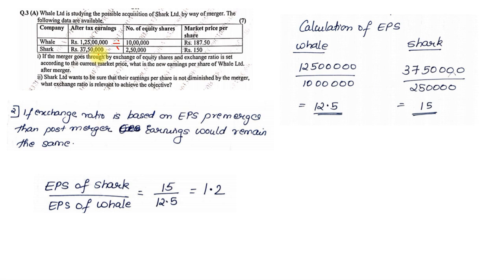The exchange ratio based on EPS = EPS of target company (Shark) divided by EPS of acquiring company (Whale) = 15 divided by 12.5 = 1.2. So if Shark doesn't want their earnings to be diminished after the merger, the exchange ratio should be 1.2. This is how we solve this sum — first finding post-merger EPS using the market price method, then finding exchange ratio using the pre-merger EPS method.